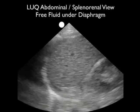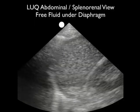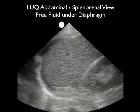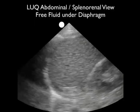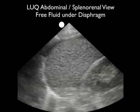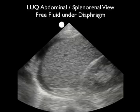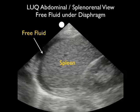One maneuver that can help you uncover fresh fluid within the left upper quadrant is to have the patient take a deep breath and analyze that infradiaphragmatic space as the diaphragm moves upward off of the spleen. Notice here that we uncover the amount of fresh fluid present right above the spleen and below the diaphragm as the patient takes a deep breath and that diaphragm moves superiorly.